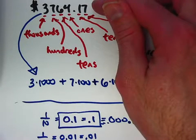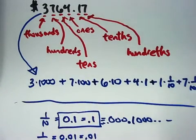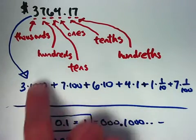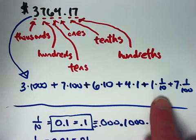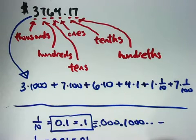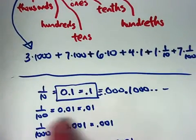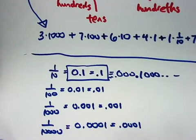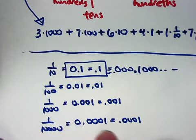3,764.17 can be thought of this way. Based on the places, those places represent powers of 10. Over here there are multiples of 10, and over here there are fractions involving 10, and 1 is sort of a special thing. We saw also that, based on that, we could easily convert these fractions, these rational numbers: 1 tenth, 1 one hundredth, 1 thousandth, 1 ten thousandth, into decimal form.